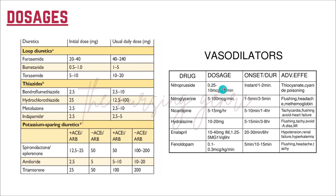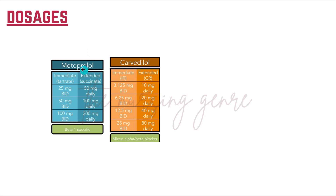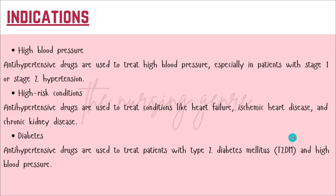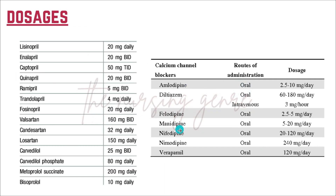For vasodilators: nitroprusside 0.25 to 10 micrograms per kg per minute, nitroglycerin 5 to 100 micrograms per minute. For sympathetic inhibitors: metoprolol 25 to 50 mg, carvedilol 3.125 to 10 mg. Again, these doses need to be adjusted based on the patient's needs.